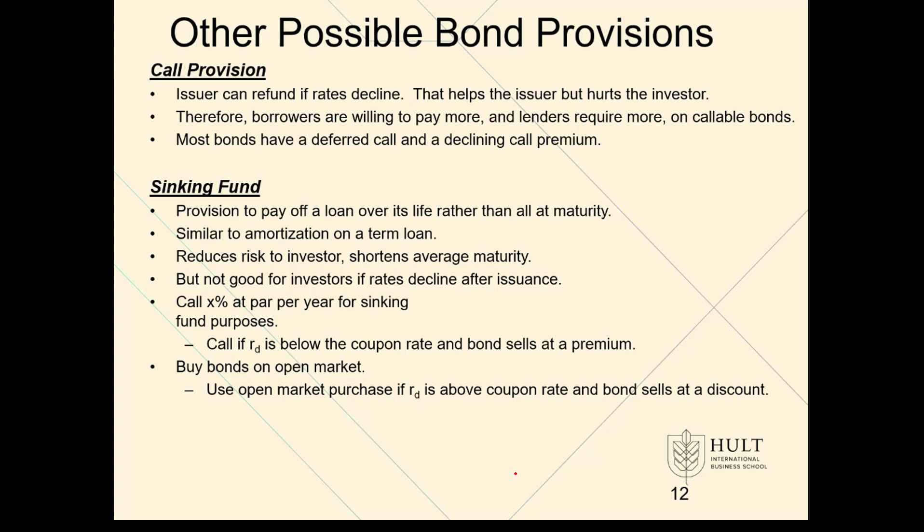Furthermore, there might be a declining call premium. So over time, as the bond gets close to maturity, the premium — meaning the extra money paid to the holder of the bond — may decline as well. That's the first group of provisions called call provisions. The second is a sinking fund.